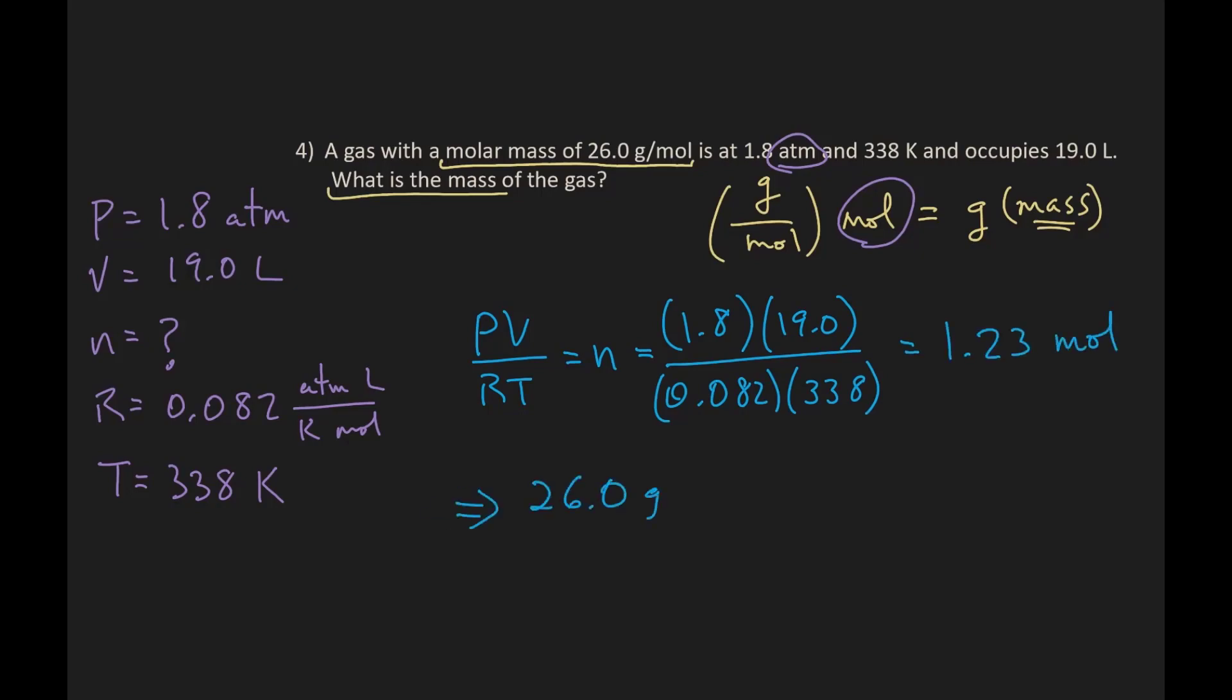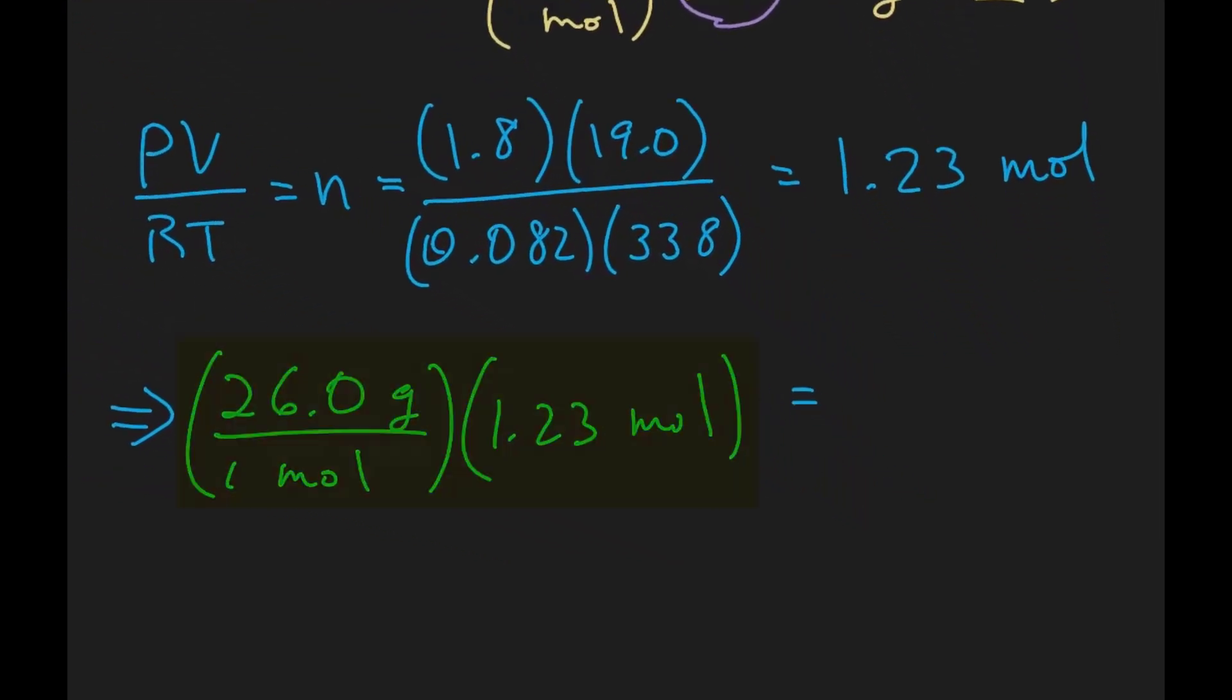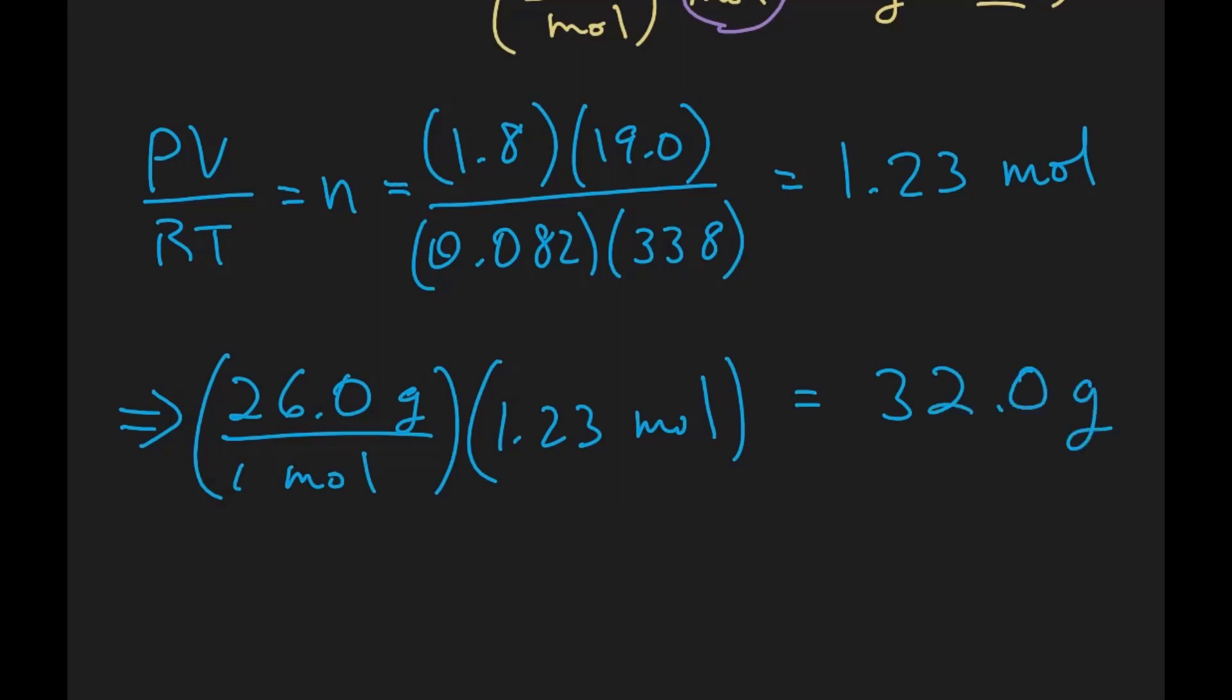So when we multiply the molar mass times the number of calculated moles, that will give us the mass of the gas. 26 grams per mole times 1.23 moles gives us 32.0 grams.